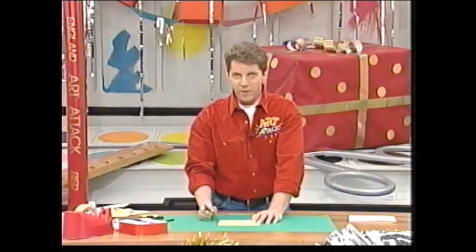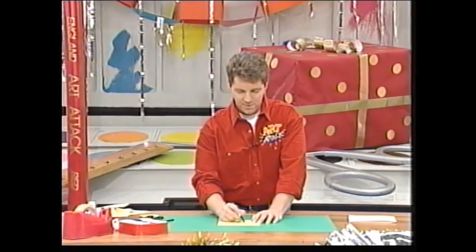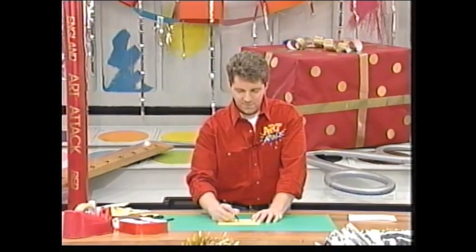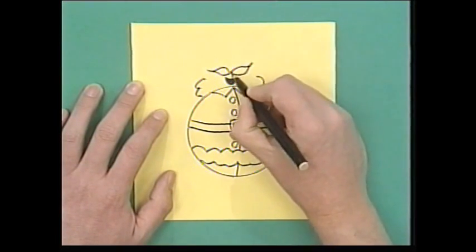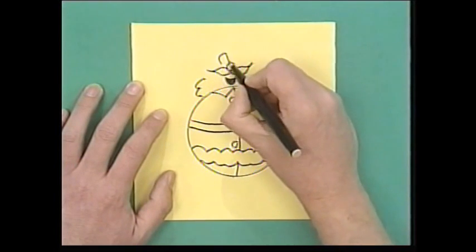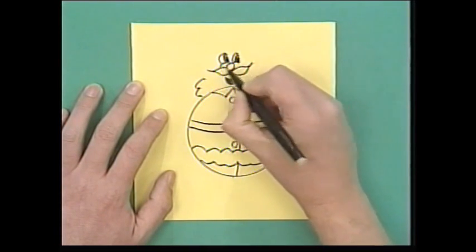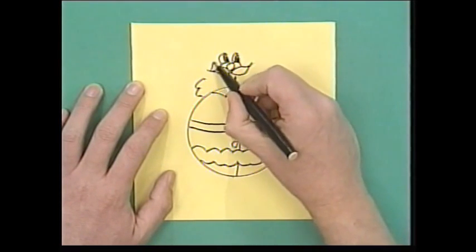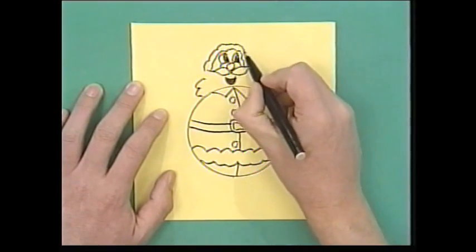And once you've put the fat bit in, put the rest of the detail around your circle. And just do his beard and his moustache and his jolly round face. Again, nice and plump. And little cartoony eyes in there. Just keep it really simple. Nothing too detailed.